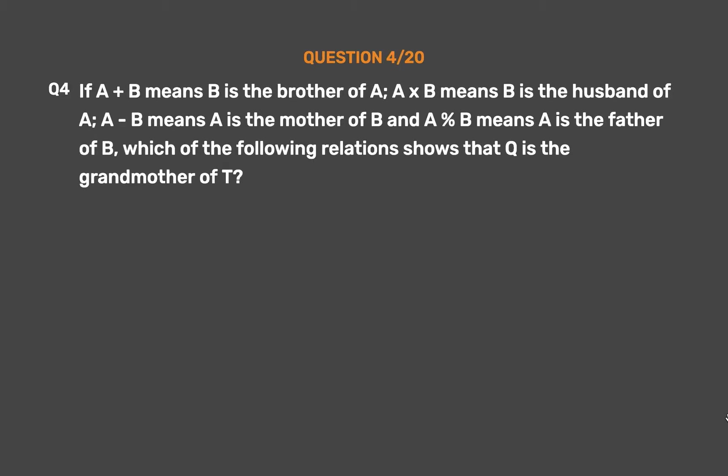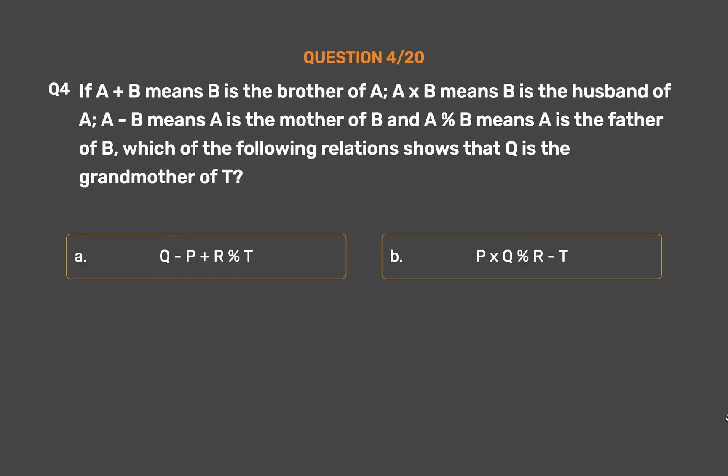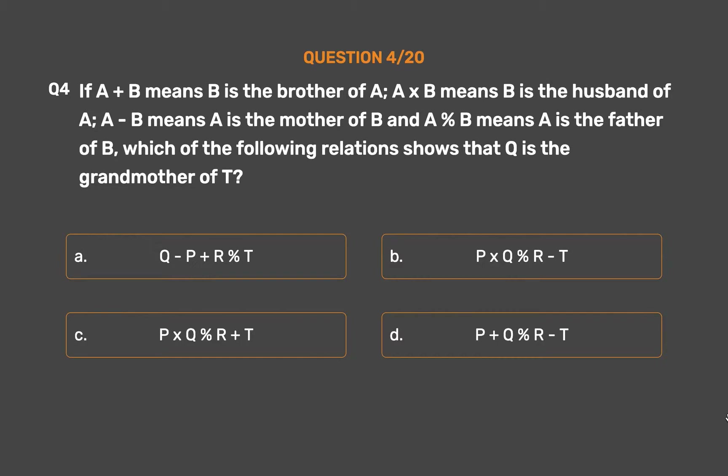Question number 4. If A + B means B is the brother of A, A × B means B is the husband of A, A − B means A is the mother of B, and A % B means A is the father of B, which of the following shows that Q is the grandmother of T? Option A: Q − P + R % T. Option B: P × Q % R − T. Option C: P × Q % R + T. Option D: P + Q % R − T.